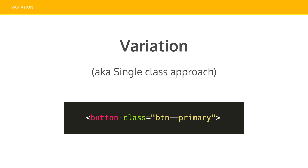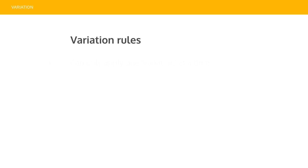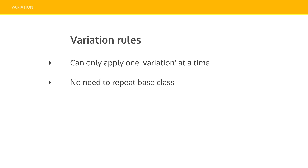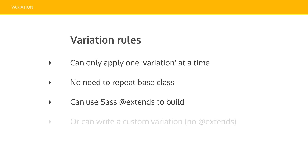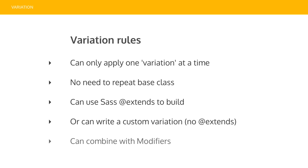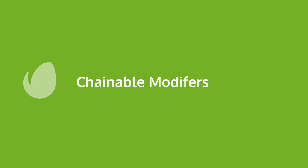It still looks the same but instead of calling it a modifier we're calling it a variation. The rules are: you can only apply one at a time — you don't want to have button-primary and button-large together, just one at a time and you won't have any trouble. You don't need to repeat the base class — it's not button button-primary, it's just button-primary. You can use Sass extends to clone something and extend upon it, or you can just rewrite it yourself. And you can combine with modifiers — I've got some code coming up which will explain this more.